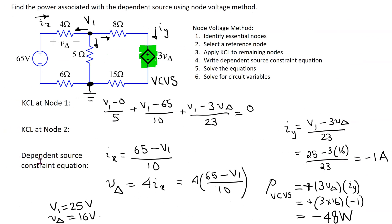In a previous video, we solved the same circuit using the node voltage method. When using node voltage method, we similarly arrive at three equations and three unknowns, and the power works out to minus 48 watts — the same result. For this circuit, solving with node voltage method or mesh current method is comparable in complexity, as both yield three equations and three unknowns.